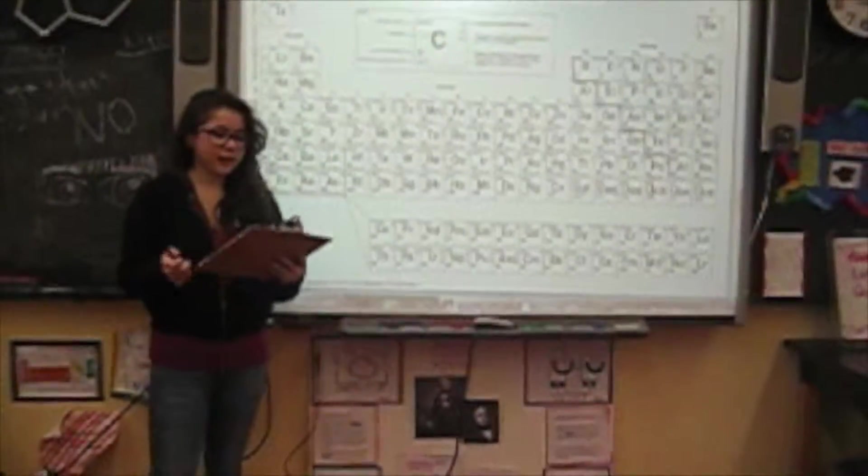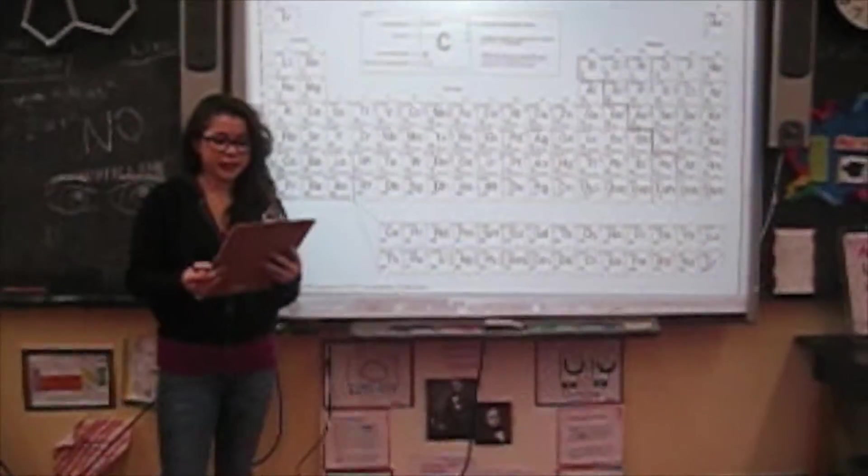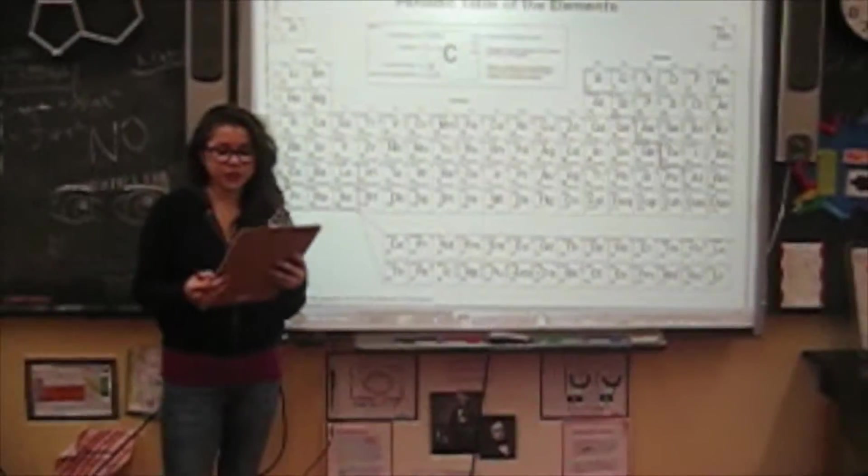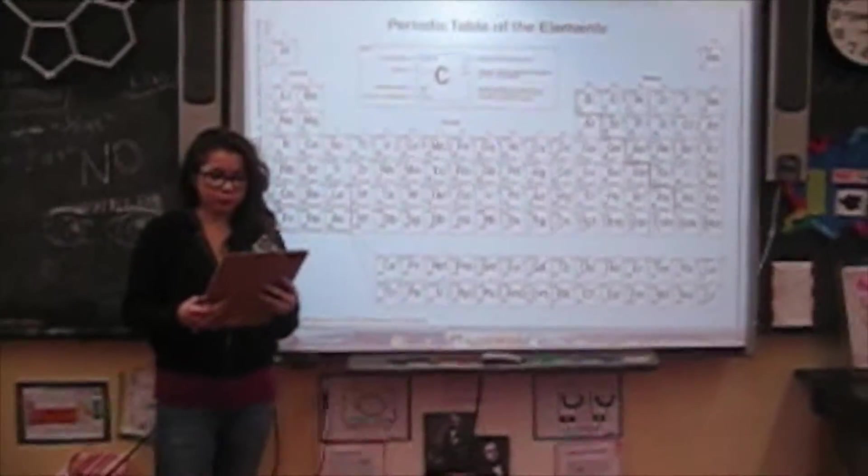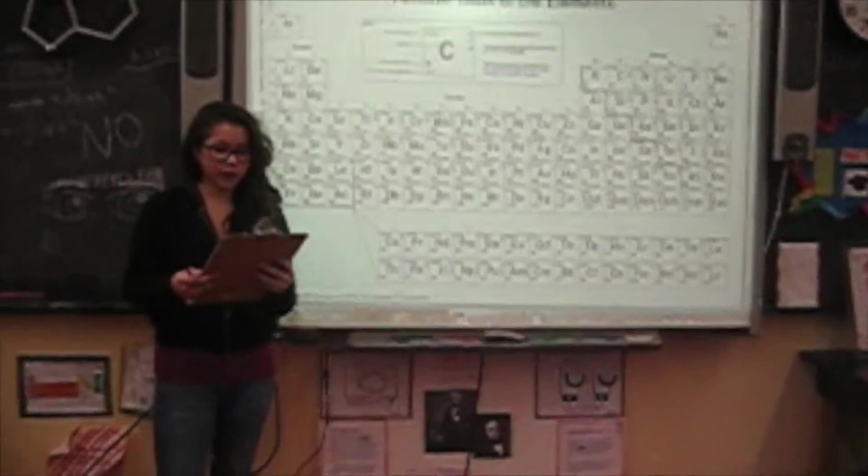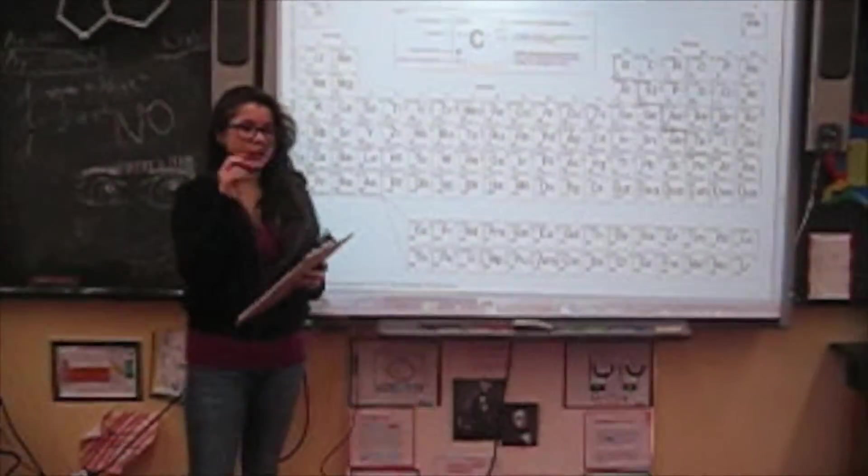Good morning class. Today we are learning about ionization energy. First, ionization energy is the amount of energy required to remove the most loosely bound electron from an atom, on the last orbital.